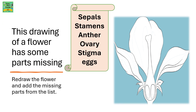This drawing of a flower has some parts missing. Redraw the flower and add the missing parts from the list: sepals, stamens, anther, ovary, stigma, and eggs.